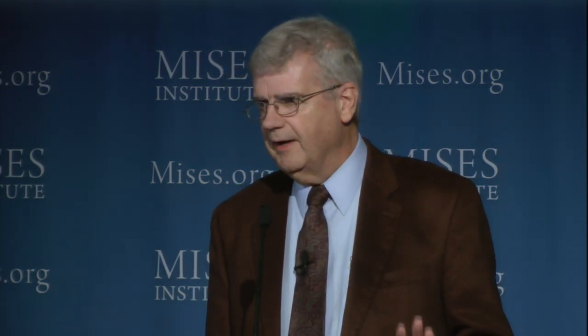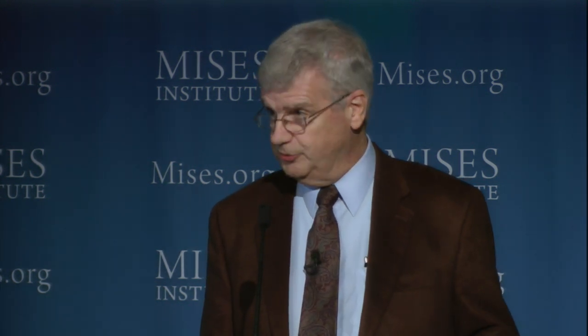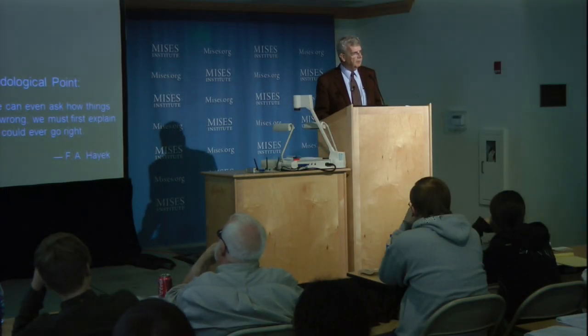Even though this lecture is about the business cycle, most of it will be answering that first question of how things can go right — to show how the market works to allocate resources inter-temporally in accordance with people's preferences for consumption now as opposed to later, which is to say their preferences for saving versus consuming. Once we get through that, the business cycle theory is just a corollary: if that market mechanism is interfered with, things go wrong in the particular way spelled out by the Austrian theory of the business cycle.